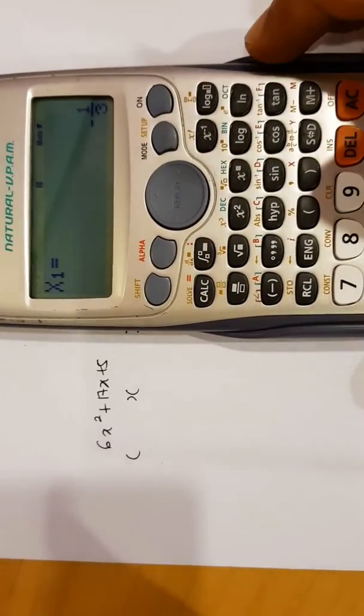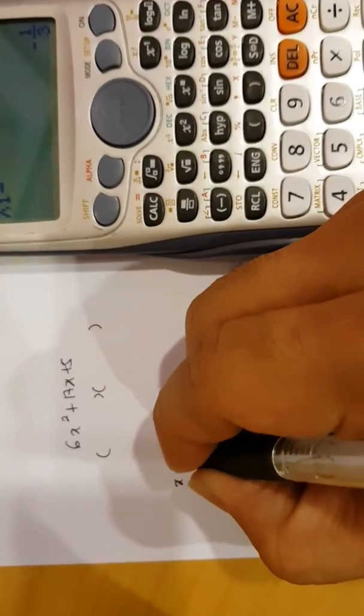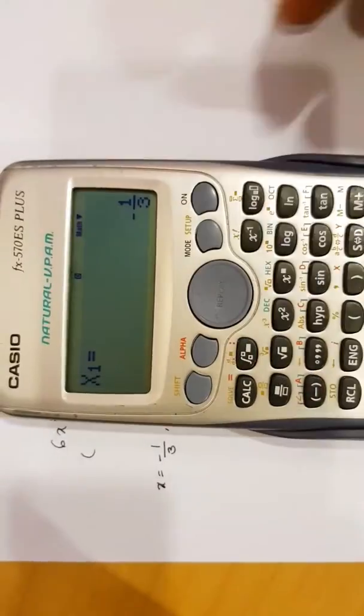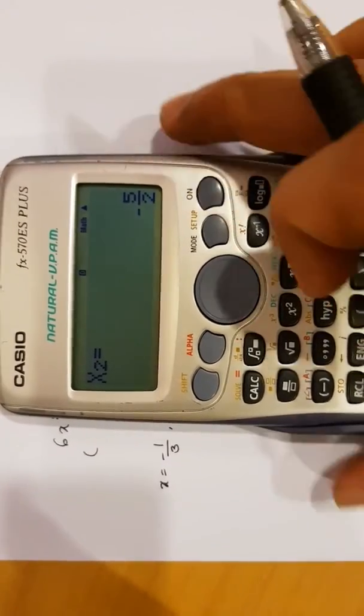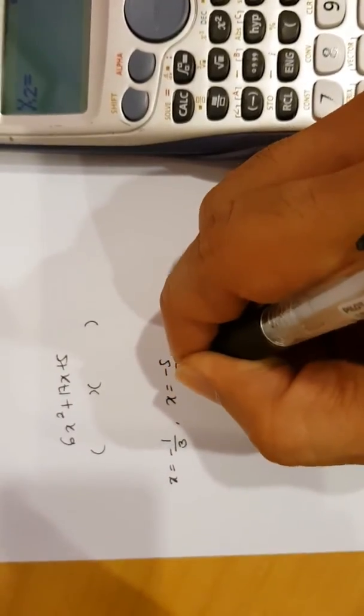Notice this time the value is a fraction. X number is negative 1 over 3. But there's another one. I press equal to get that number. I have negative 5 over 2. X is equal to negative 5 over 2.